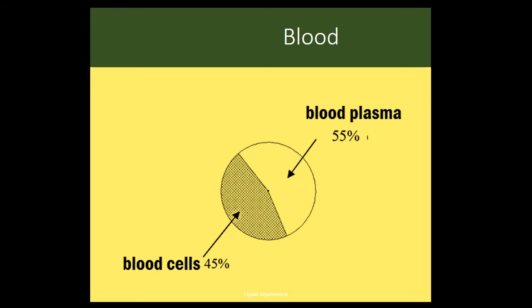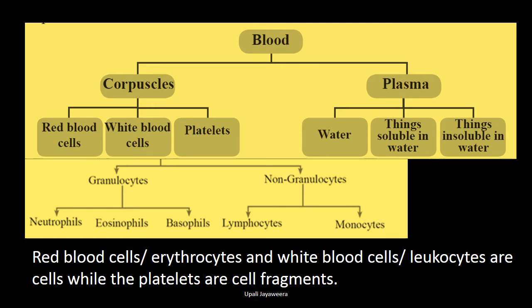By this diagram you can find the percentages of blood plasma and blood cells. 55% of blood is blood plasma and 45% of blood is blood cells. Blood consists of two main parts: corpuscles and plasma. The solid part is the corpuscles and the liquid part is the plasma. Corpuscles can be divided into three: red blood cells, white blood cells, and platelets.